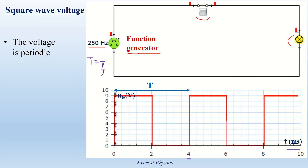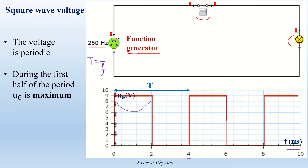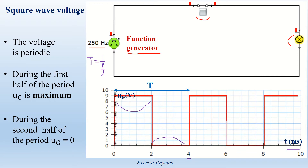What happens during each period? During the first half period, the voltage is maximum, so it is equal to the amplitude of the function generator, which is equal to 9 V. In the second half period, the voltage is 0. This is the square wave voltage.